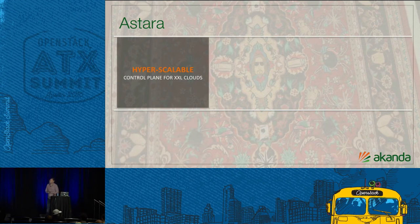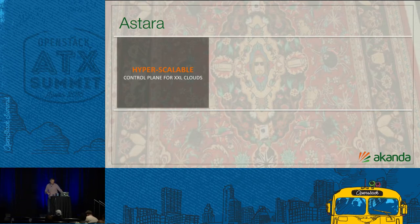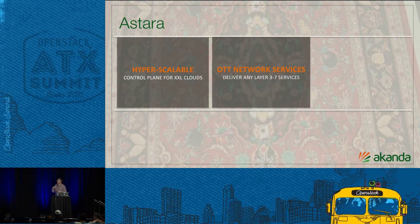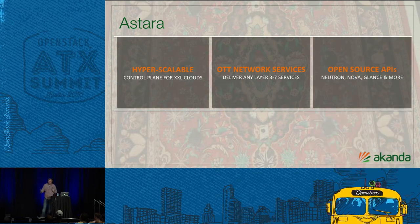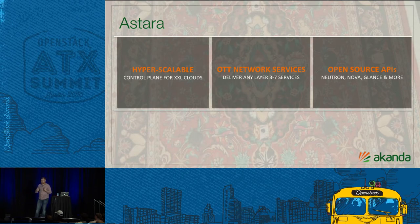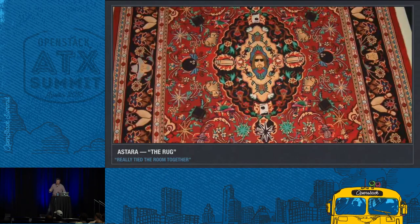This came from the public cloud use case. We wanted it to be hyper-scalable — we knew we were going to have a large number of endpoints and it needed to be highly available. We also knew we wanted to deliver services over the top, specifically layer three and above services. We wanted provisions to grow that set of services so they were easy to add and integrate. Yet, because it was born out of the public cloud use case, we needed to maintain open source APIs: standard Neutron, standard Nova, standard Glance. Writing extensions makes it really hard on the tooling, so we wanted to avoid all that.